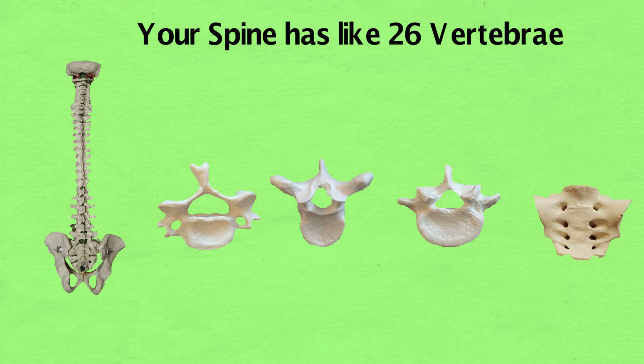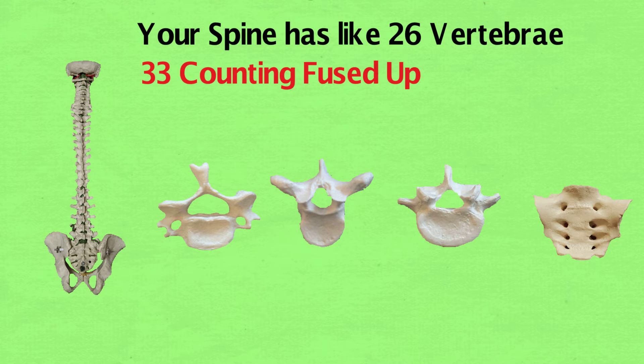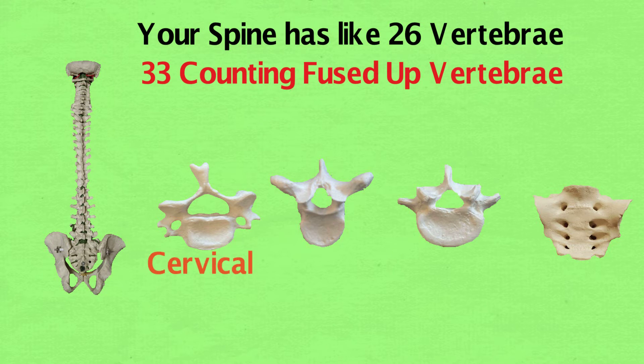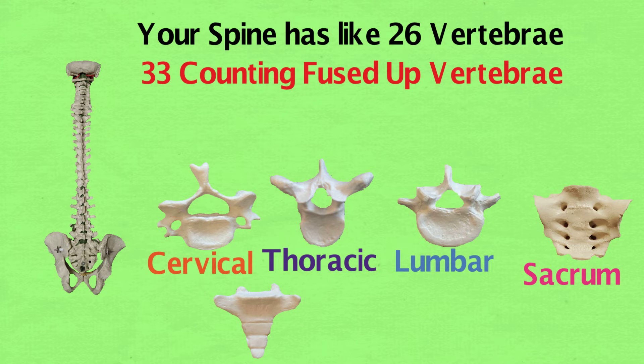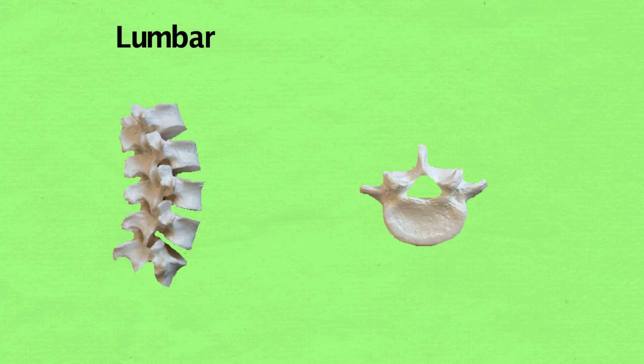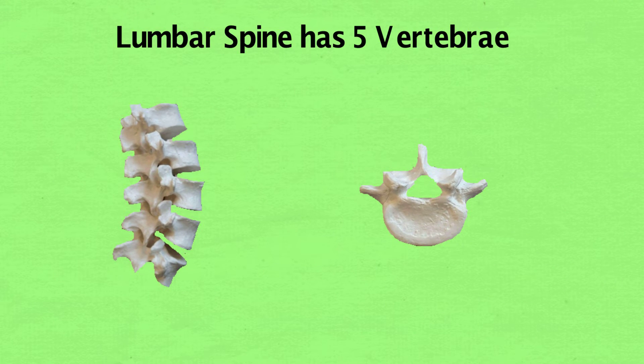Your spine has like 26 vertebrae, 33 counting the fused vertebrae. Cervical, thoracic, lumbar, sacrum — don't forget the coccyx, that is the tailbone.